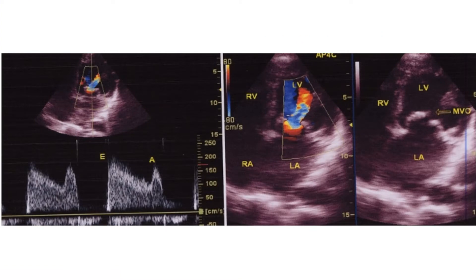Mitral valve area can be estimated from the downward slope of the E wave. The slope becomes more flat as the severity of mitral stenosis increases. The pressure half-time (PHT) of the descent of the E wave is calculated by the computerized algorithm in the echocardiograph. PHT is the time taken for the peak pressure gradient to fall by half, or the velocity to fall by a factor of root 2.